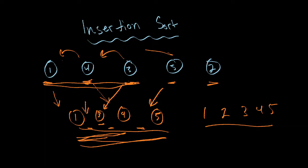So that's how insertion sort works. You can see you're going through each one and you're inserting it in its proper place in the already sorted list of values before it. This has an efficiency of n squared using the big O notation, and we'll go over that later once we visualize this in Python and look at the graph. So let's jump into that now.